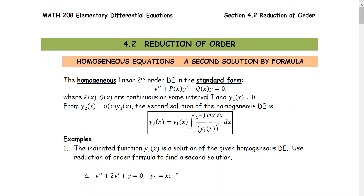Section 4.2: Reduction of Order. In this section, we will find the second solution of homogeneous and non-homogeneous equations. For the homogeneous equations, the linear second-order will be in the form of y'' + p(x)y' + q(x)y = 0, where p and q are continuous on some interval I and the first solution y1 is not zero.